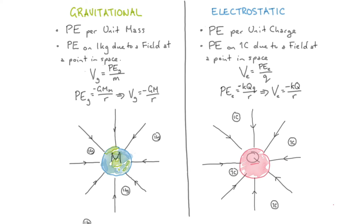As you can see in these diagrams, the potential is the potential energy per mass — or per one kilogram at any point in space. As we get further out, the potential energy increases, so the potential increases. Similarly, it's per charge for electrostatics.